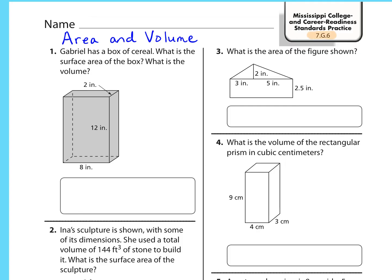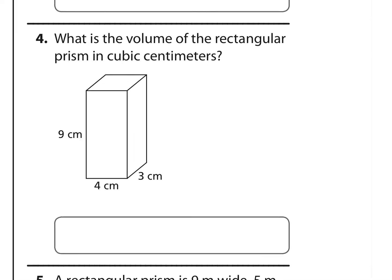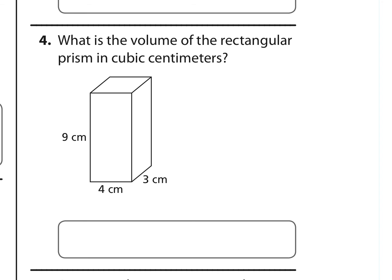Standard 7G6 is about area and volume. Looking at problem number 4, what is the volume of the rectangular prism in cubic centimeters? It's asking for volume. We have a formula for volume: V equals the base area times the height. In this case, the base is a rectangle. The area of a rectangle is length times width, so I'm going to replace the base with length times width and then multiply by the height.